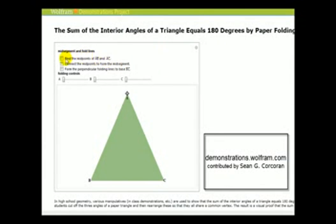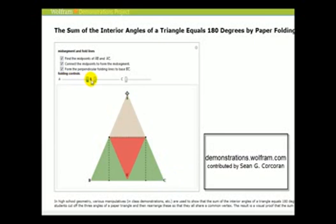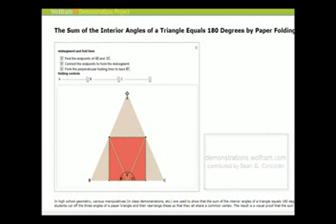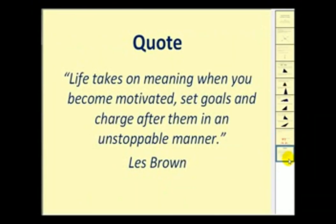I also like another Wolfram demonstration that shows this property. What we can do is find the midpoints of sides AB and AC, then connect the midpoints to form the midsegment. Next we drop perpendiculars from these two endpoints. Now we fold these three smaller triangles together — notice that angle A, B, and C are the angles of the triangle. If we fold in vertex A, then fold vertex B in, and then fold the last angle in, we can see that angles A, B, and C form a straight angle, which measures one hundred eighty degrees.